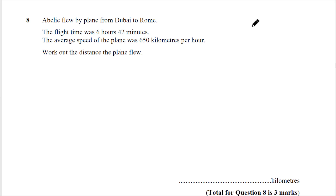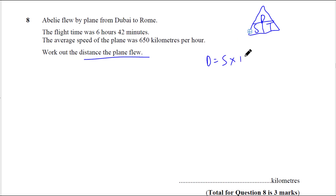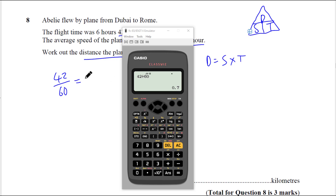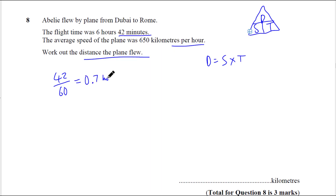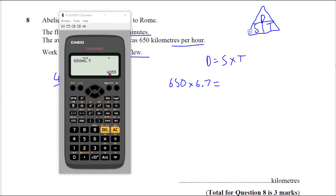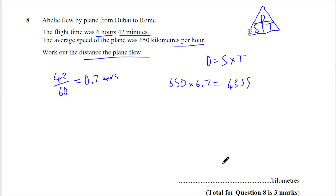Question 8 — a speed, distance, time question. Using the triangle: distance equals speed times time. Now this is in hours but we have minutes here. There are 60 minutes in an hour, so we need to work out 42 divided by 60 to convert to hours — that's 0.7 hours. We add that to the 6 hours, so we do 650 for the speed times 6.7 hours to get that answer. And you can see it's 4355.